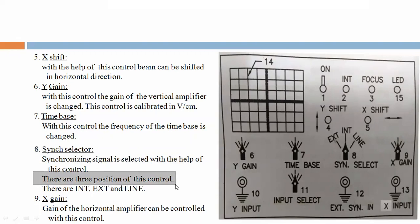Eight, Sync-selector. Synchronizing signal is selected with the help of this control. There are three positions of this control. There are internal, external and line. In this figure, see that the sync selector is there. Here, external, internal and line. Three components are there.